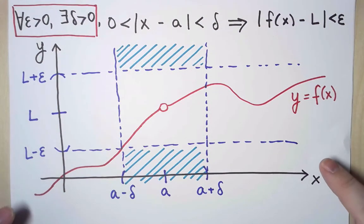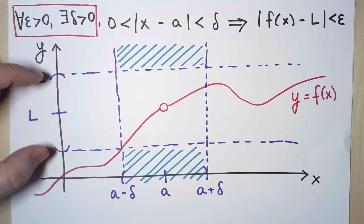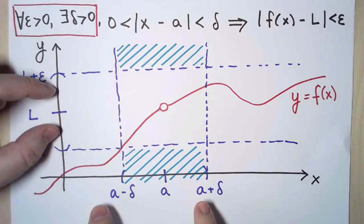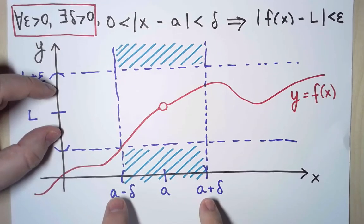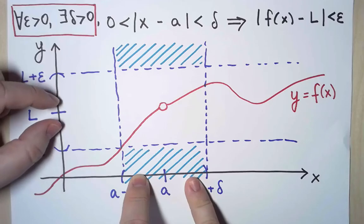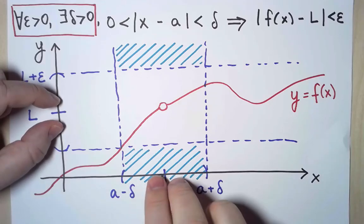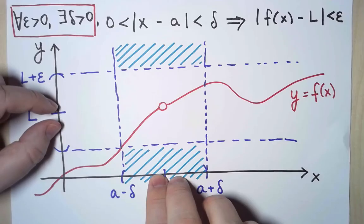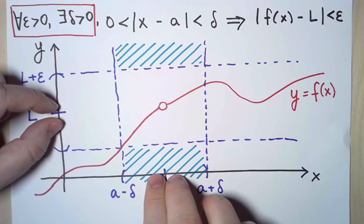Let's see what this means. In this example, in the example that has a limit, for this value of ε, there is one value of δ that works. If I make ε smaller, I will have to change δ, but there will be another value of δ also smaller that works. And if I make ε even smaller, well, I can find a value of δ even smaller that works. And no matter how small ε is, I can find a value of δ that makes the implication work.